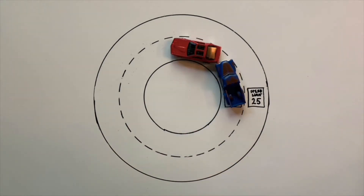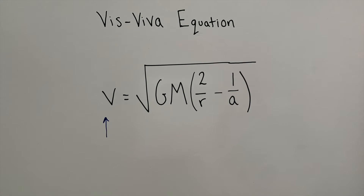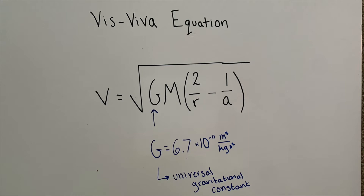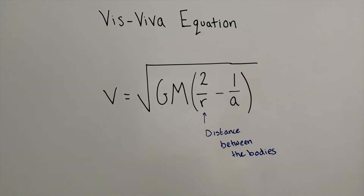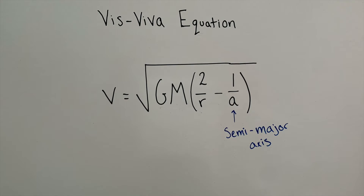We can also see this using the Vis-Viva equation. The Vis-Viva equation is used to solve for the velocity of an elliptical orbit. The big G represents the gravitational constant — on Earth, that number is around 6.7 times 10 to the negative 11. The big M represents the mass of the object you're orbiting around. The r is the radius, or the distance between the orbiting body and the central body. The little a represents the semi-major axis of your ellipse — the line segment from the center of the ellipse to the widest point.